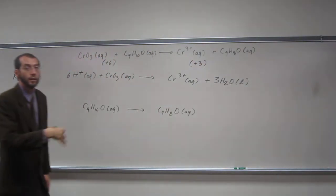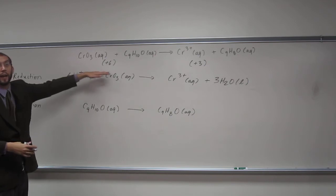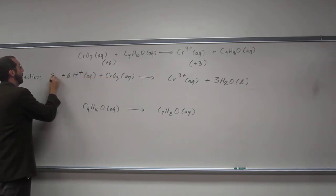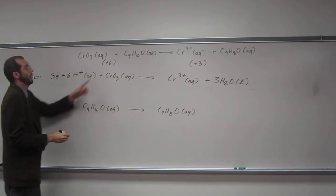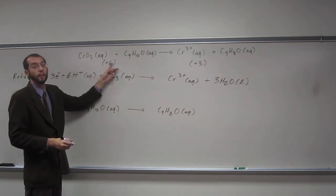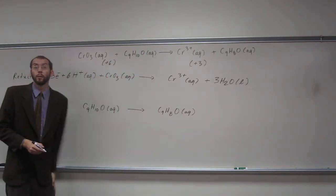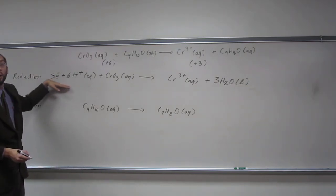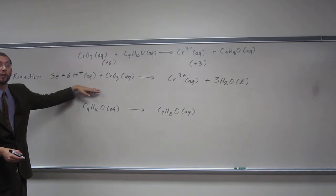The next thing we do is balance our charge. On this side, we have +6, and on this side, we have +3. To balance our charges, we'll add three electrons here. Three minus gives us three plus. So we have balance in both atoms and charge on this reaction.